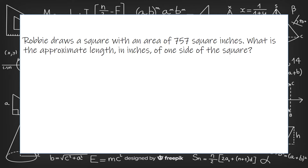Robbie draws a square with an area of 757 square inches. What is the approximate length in inches of one side of the square? Remember that for a square, the area is s squared — the side length squared.